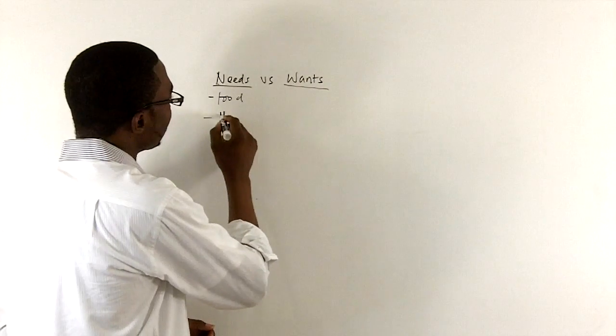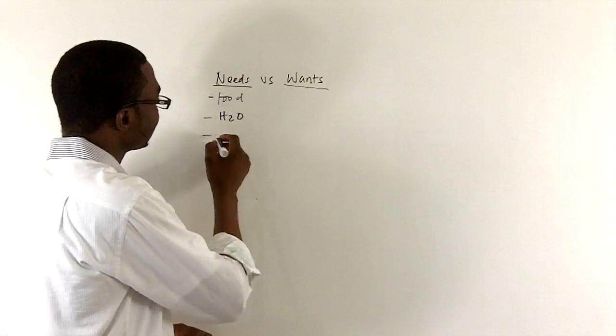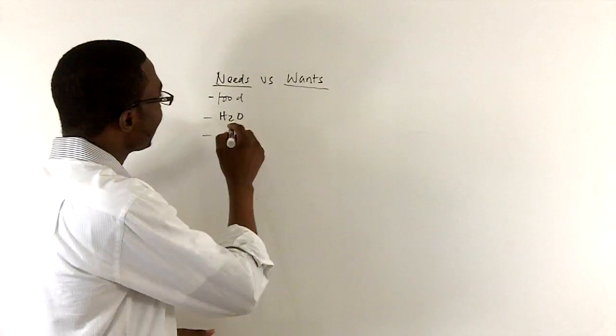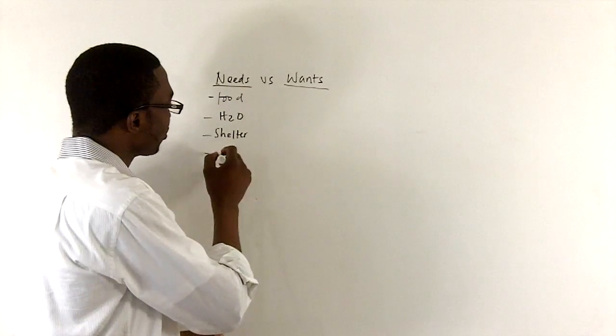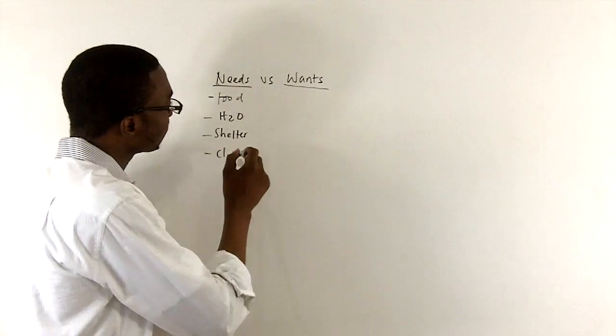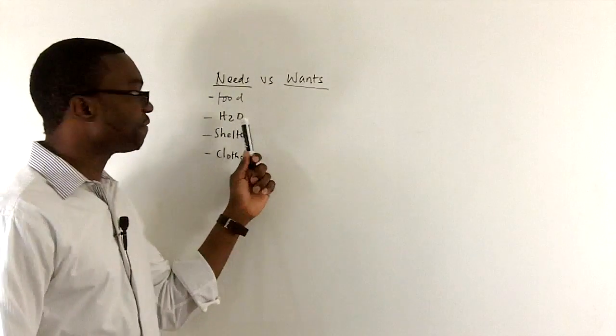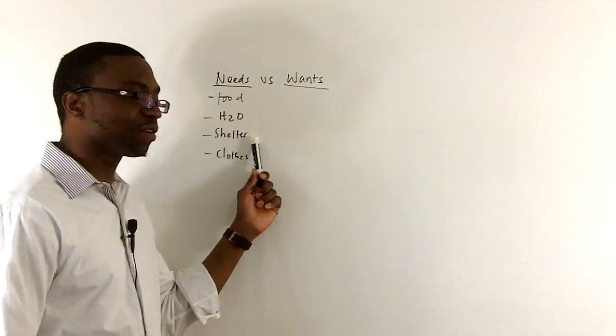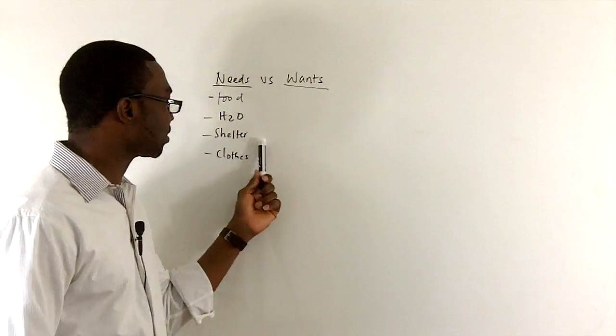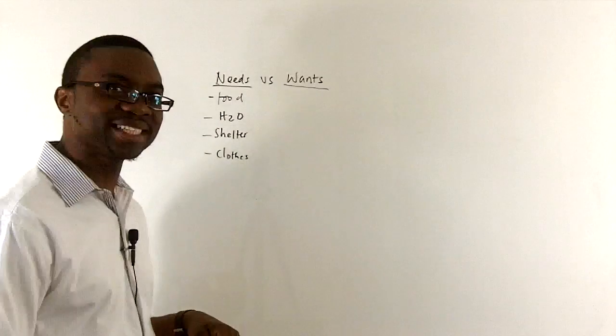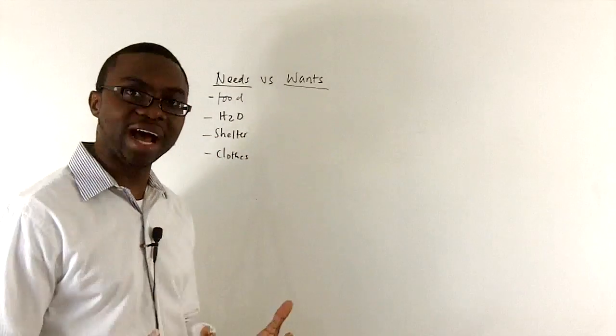I need to drink water. H2O. I need shelter. And I need to wear clothes. Because if I don't eat, I can't function. If I don't have a place to sleep at night, the weather is bad enough, I can't live outside, and I have to clothe myself. So these three basic things are very crucial to survival.